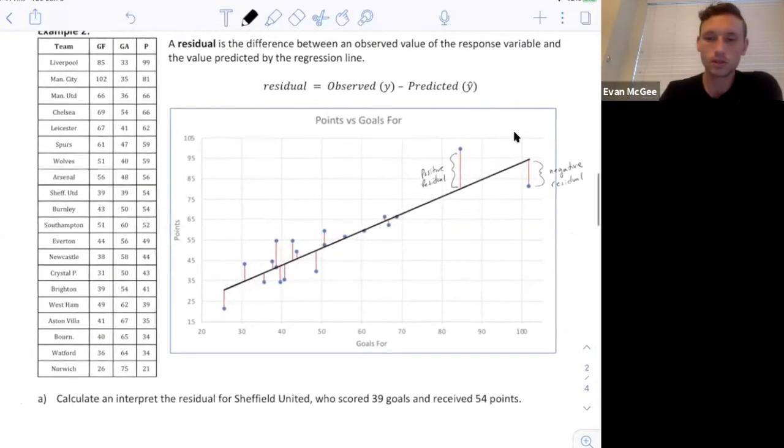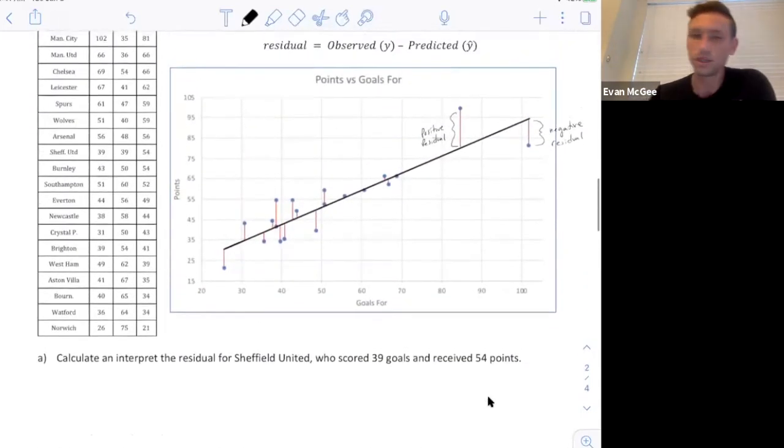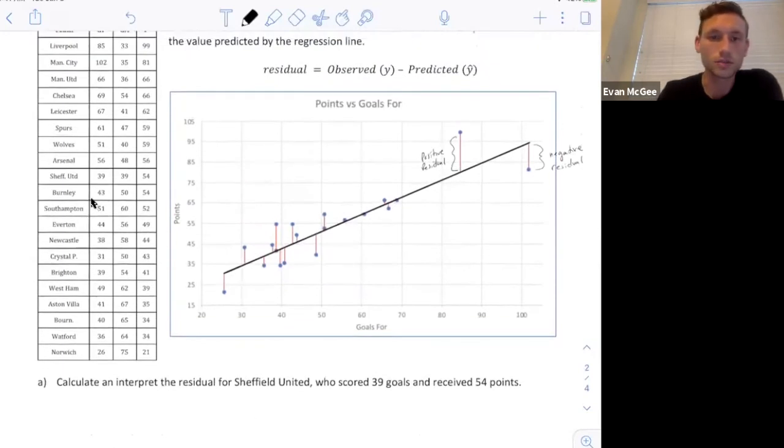Let's pick a point and calculate the residual. Sheffield United scored 39 goals and they received 54 points. To calculate the residual, I'm going to have to plug in x and figure out their predicted number of points and compare it with how many they actually scored. You can see Sheffield United is right here in the table. They had 39 goals and 54 points.